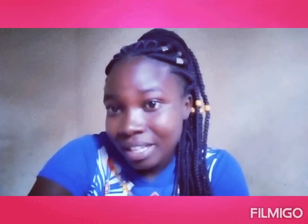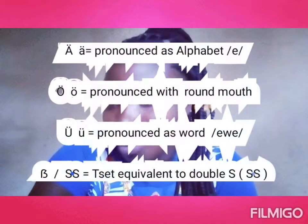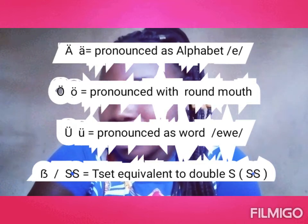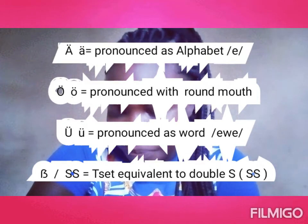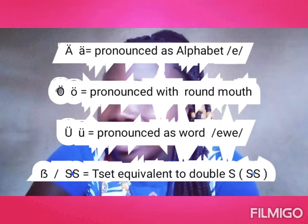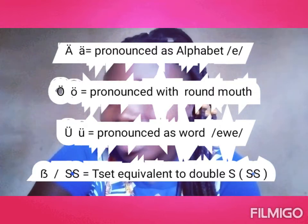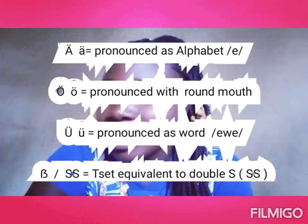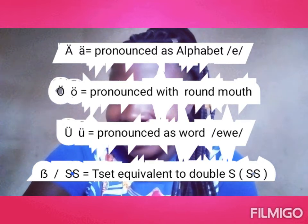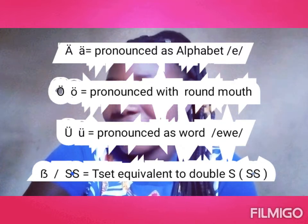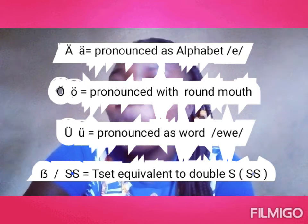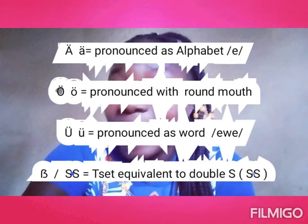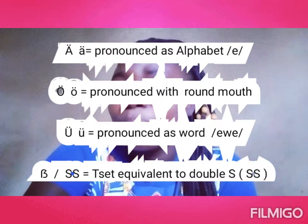To add on, German has four more additional alphabets. These are A umlaut, O umlaut, U umlaut, and TET. When you clearly look at the umlaut, the only difference with the normal A, O, and U comes with the two dots above the umlaut. So those two dots are what we call umlaut in German, and for that reason, there must be a difference in pronunciation.